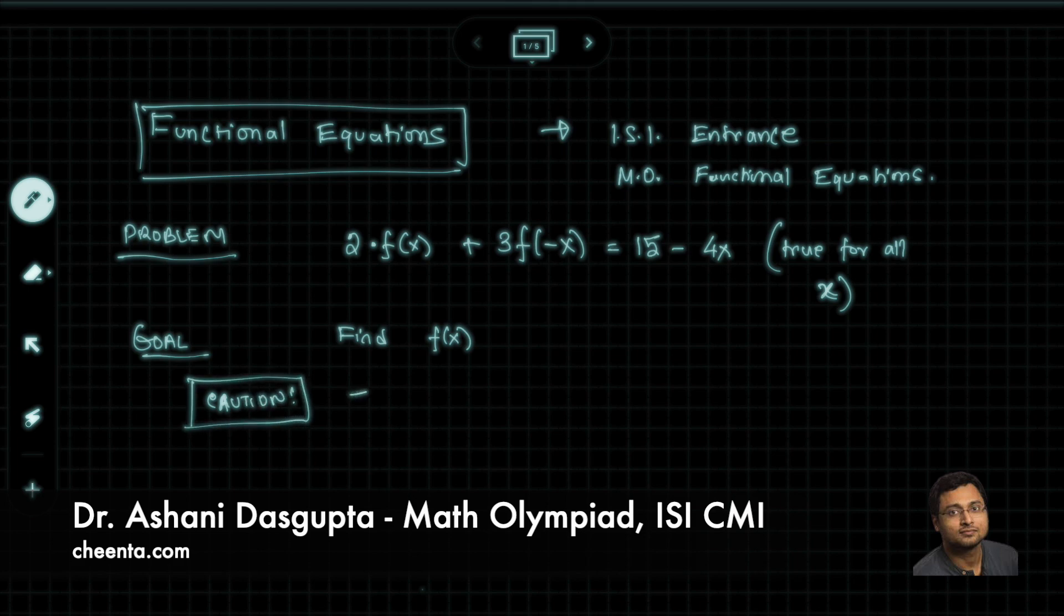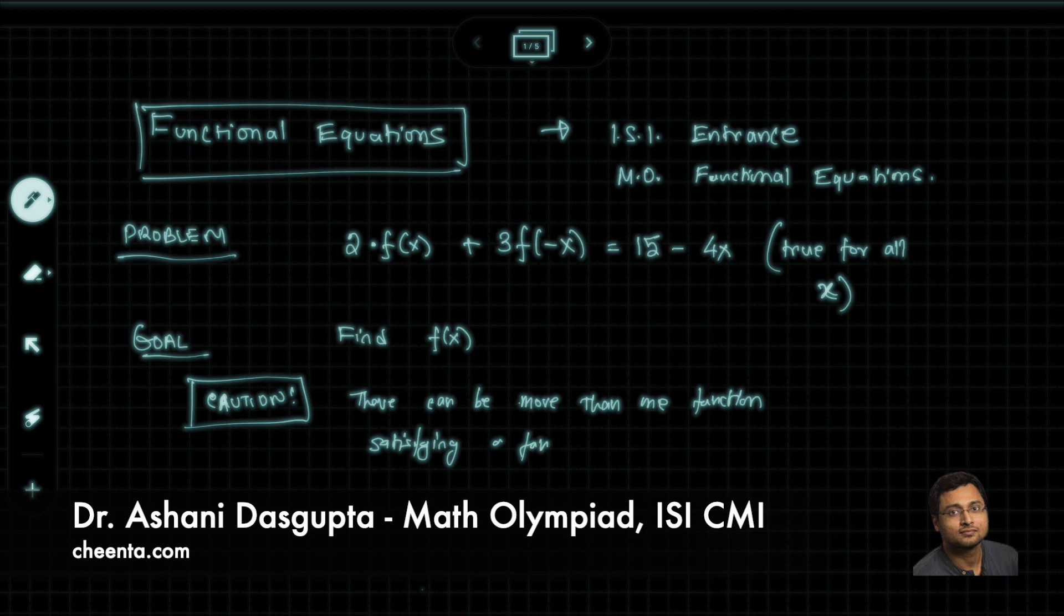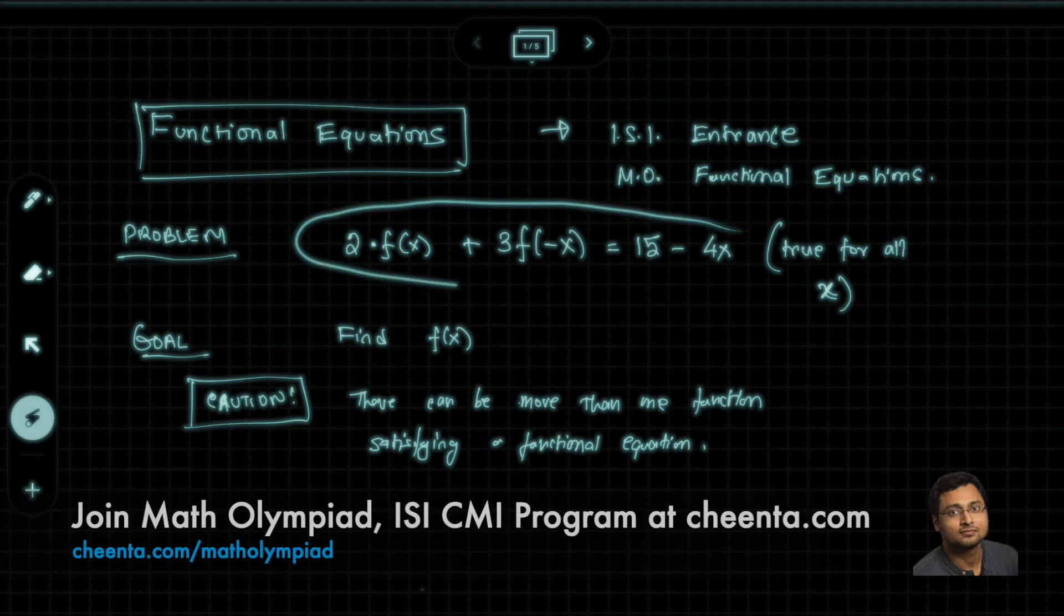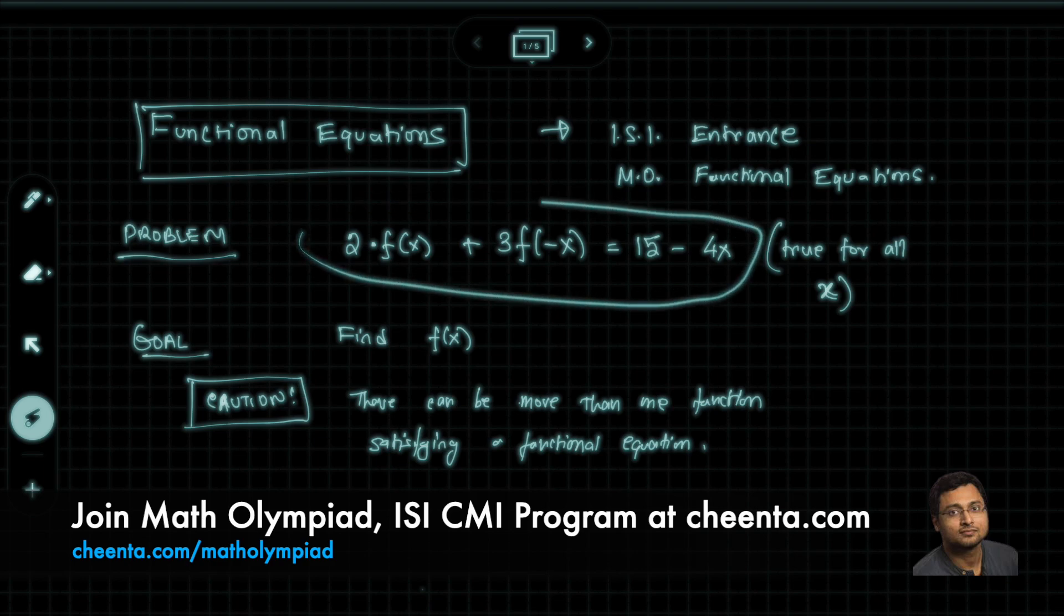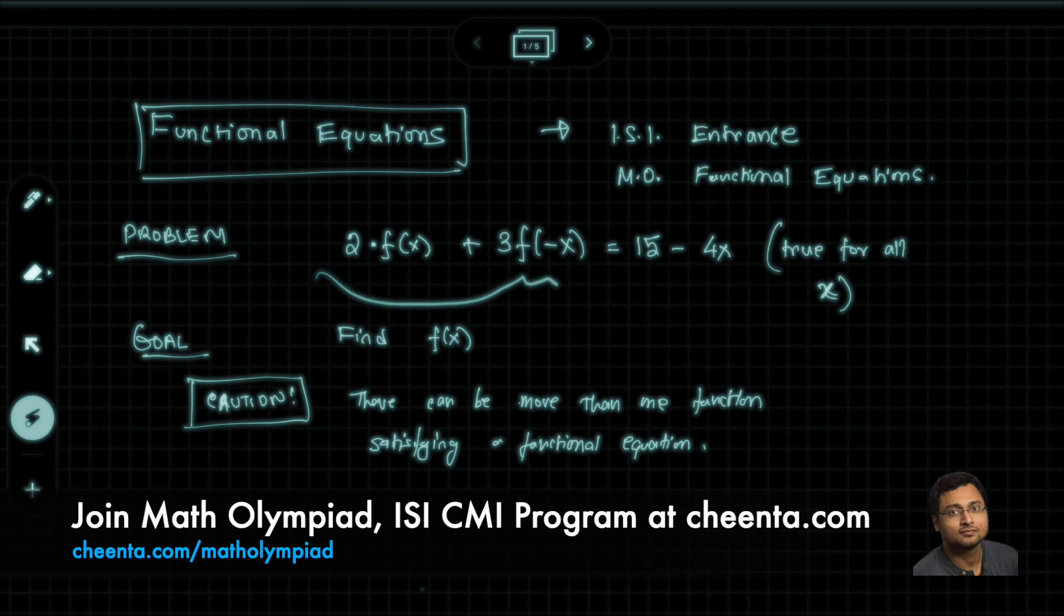There can be more than one function satisfying a functional equation. If you ask what is a functional equation, it is a condition on a function like this. We want to know what are those functions which satisfy this particular condition.